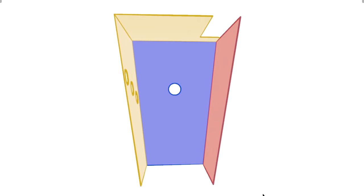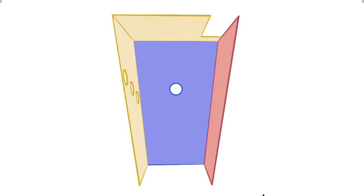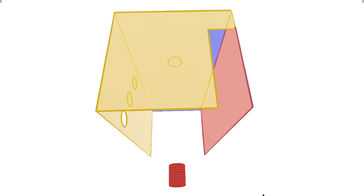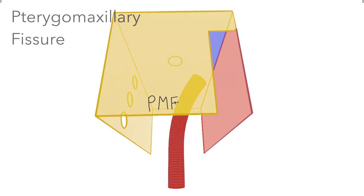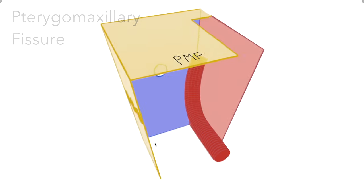Firstly we'll discuss the arteries which pass through here. The maxillary artery enters through the pterygomaxillary fissure. This being the pterygoid process of the sphenoid and this the maxilla, this is thus the pterygomaxillary fissure.